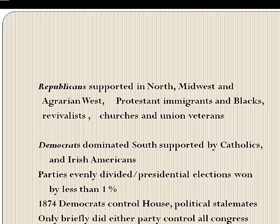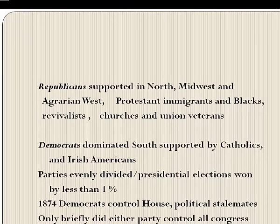By 1877, Democrats dominated the South and found support among Catholics, especially Irish Americans in the cities — partly because the Republicans were known as the party of morality and were trying to outlaw drinking. The parties were closely divided, and in most presidential elections between 1876 and 1892, the margin separating the candidates was less than 1% of the popular vote.